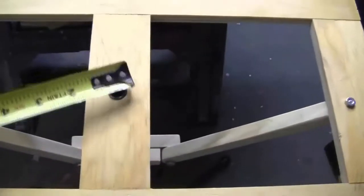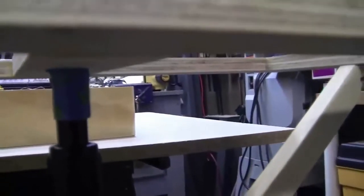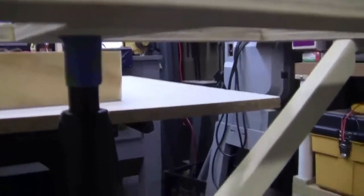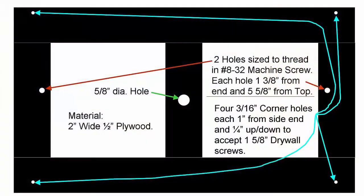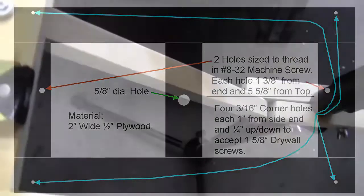And in the middle of that piece, I've drilled a five-eighth inch hole, and that five-eighth inch hole fits the upper part of the microphone stand. These pieces, again, are one-half inch plywood, and they are two inches wide.